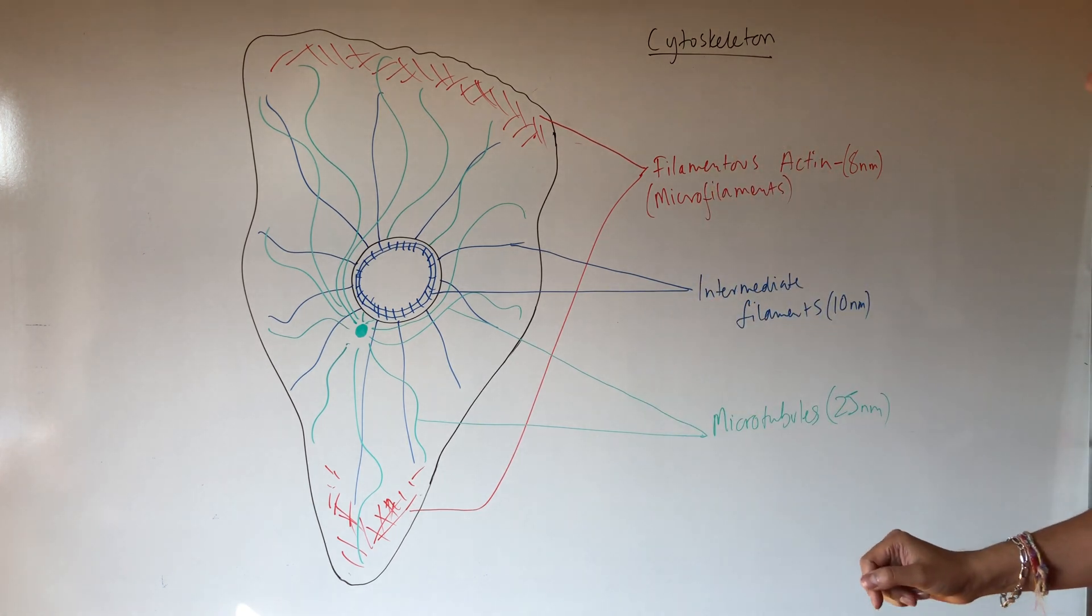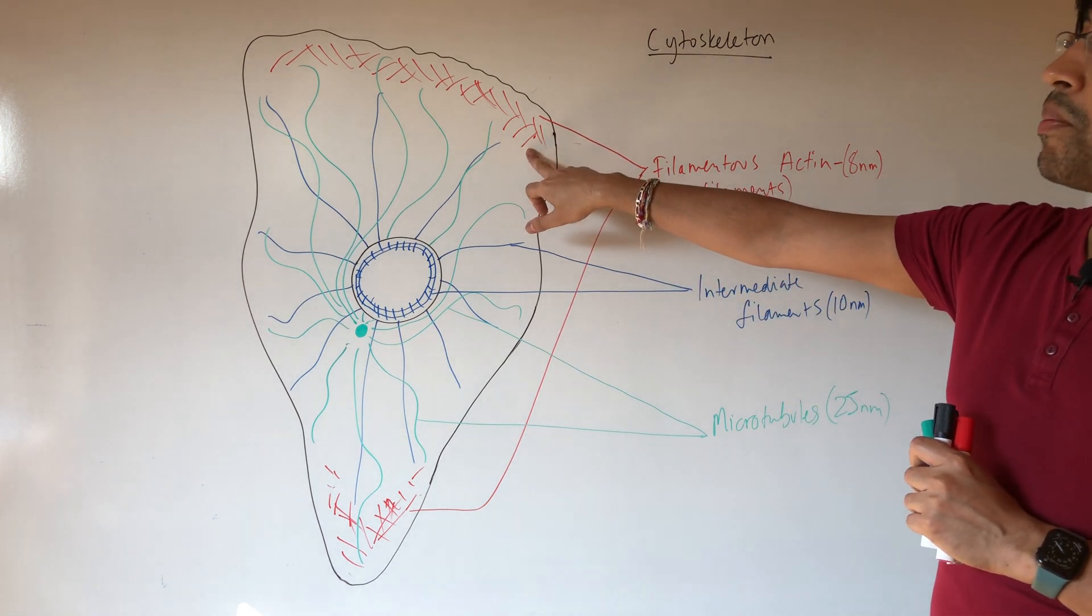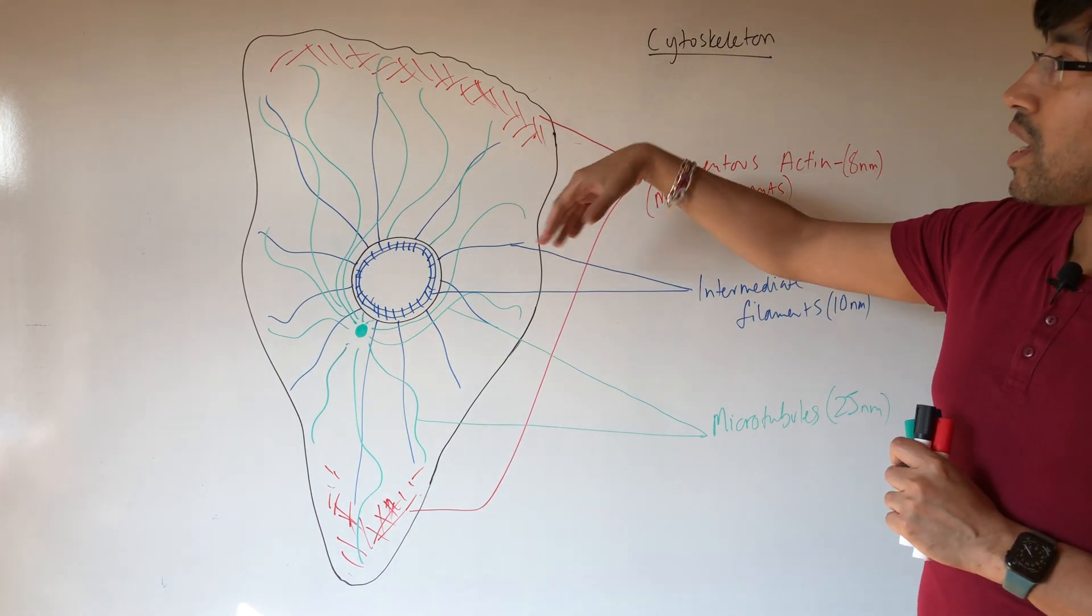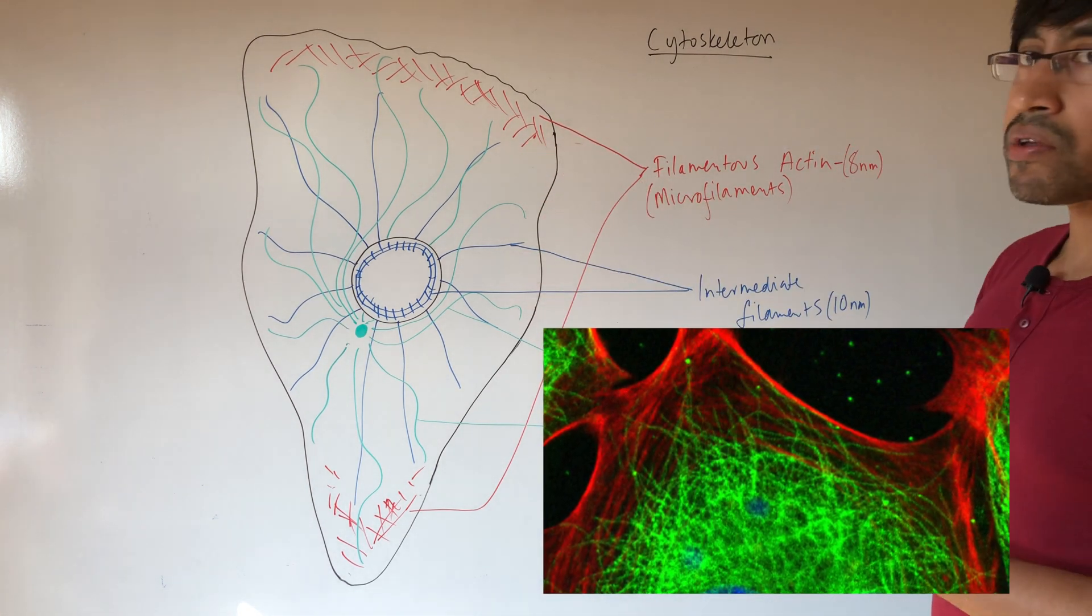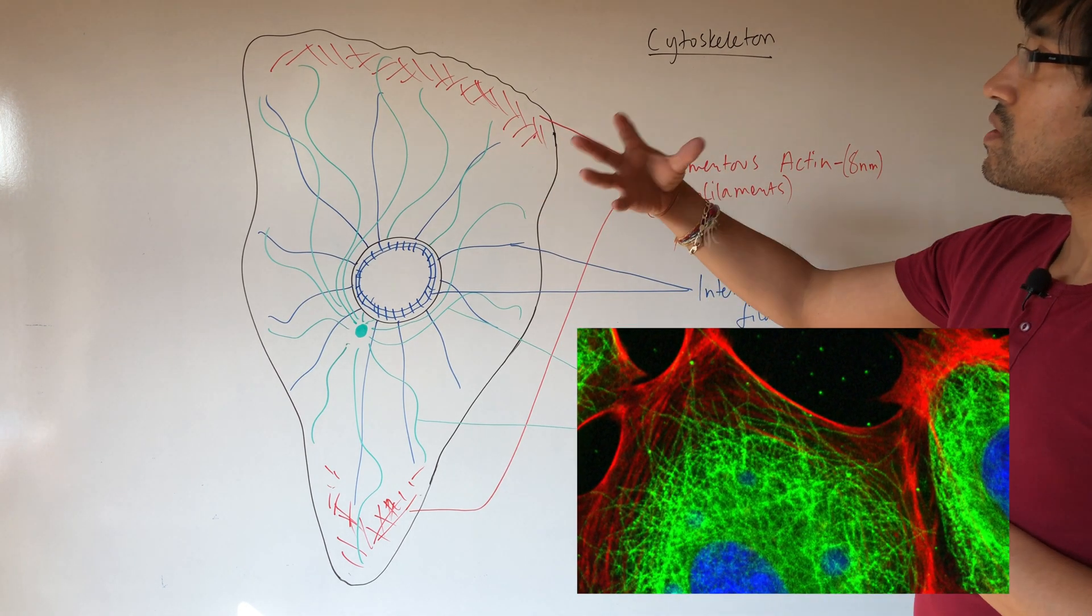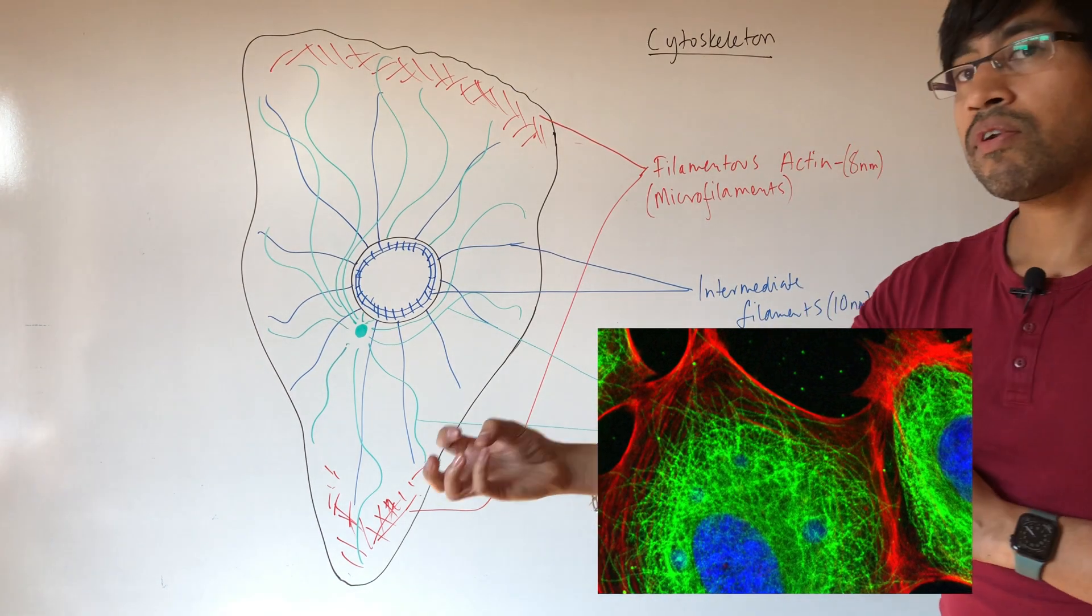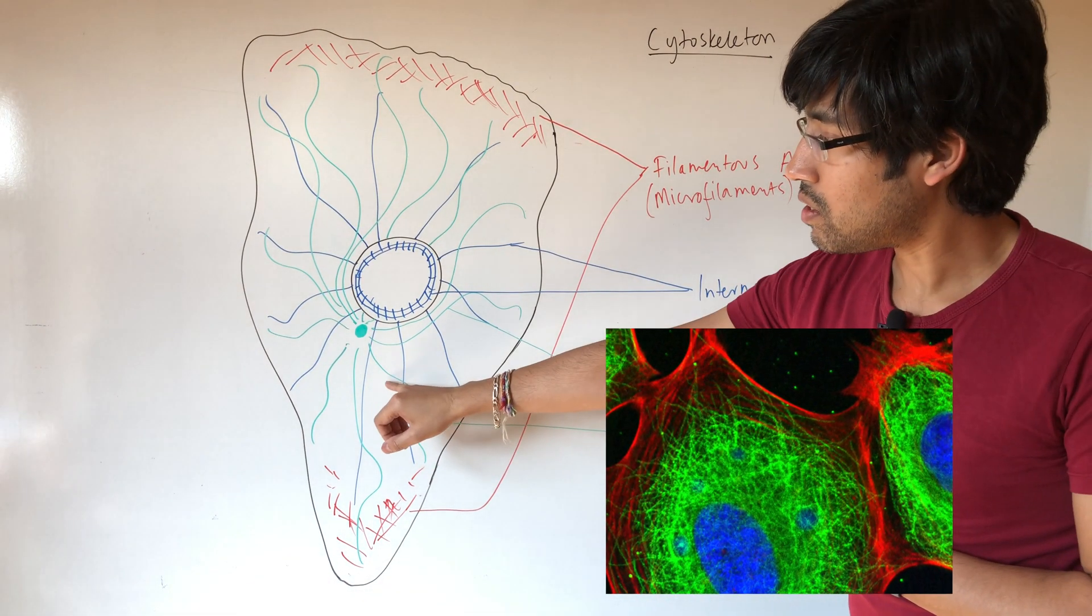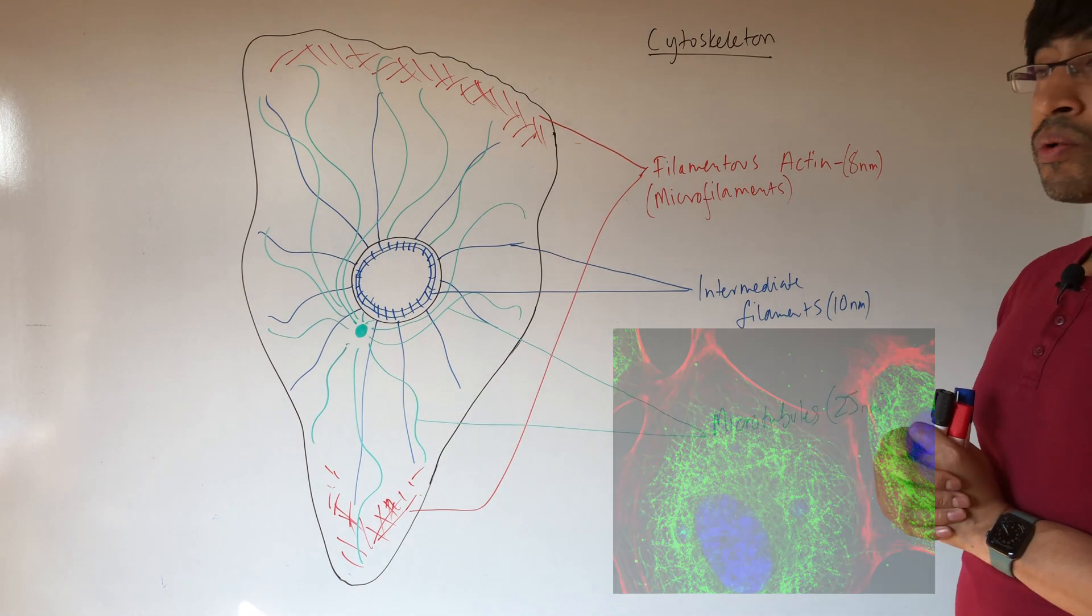Now we'll stick with this color scheme. Usually these elements are shown by confocal laser scanning, confocal microscopy, so the different elements are labeled. And red, usually it's the red fluorescence that indicates the filamentous actin network. The green fluorescent labels indicate the microtubule network and the intermediate filaments blue.